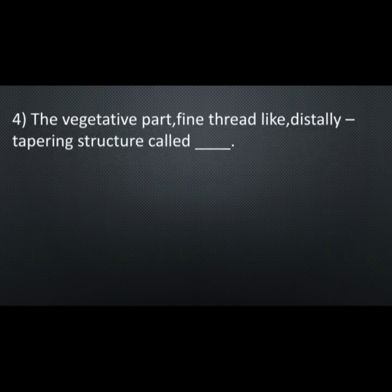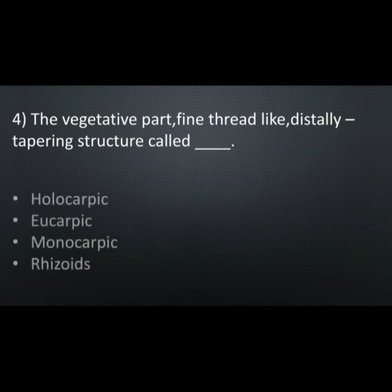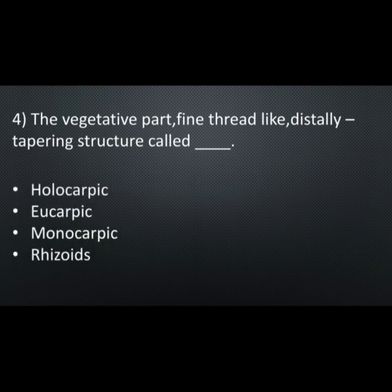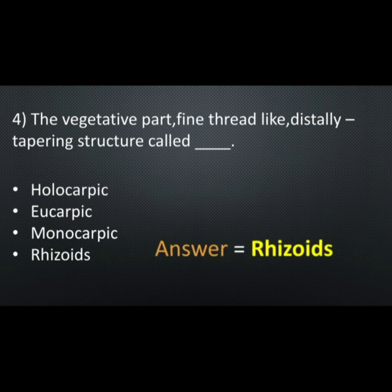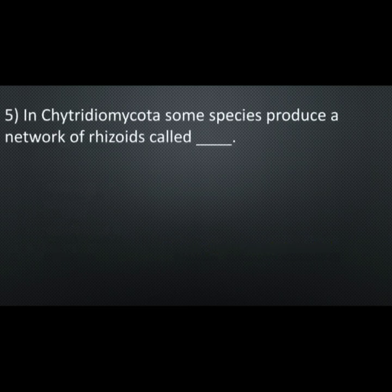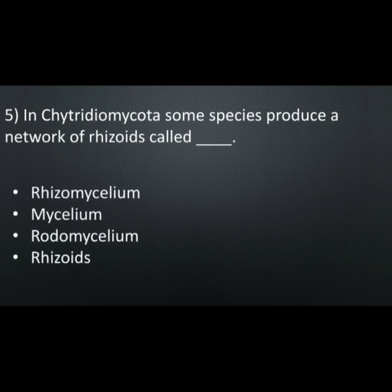Question number four: the vegetative part is a fine thread-like, distinctly tapering structure — options are: holocarpic, eucarpic, monocarpic, rhizoid. Correct option is: rhizoid. Question number five: in Chytridiomycota some species produce a network of rhizoids called — options are: rhizomycelium, mycelium, rhodomycelium, rhizoid.